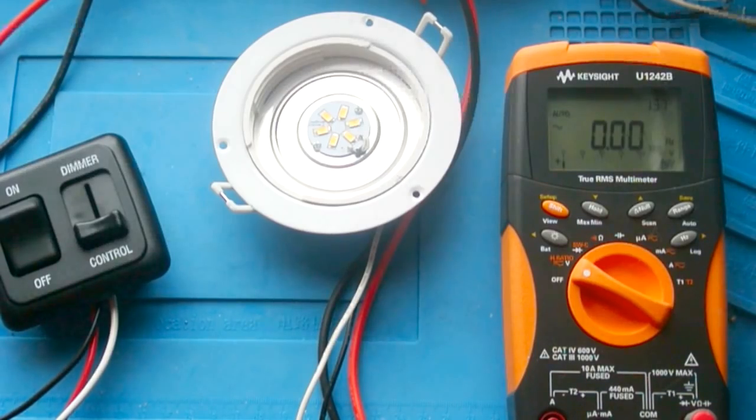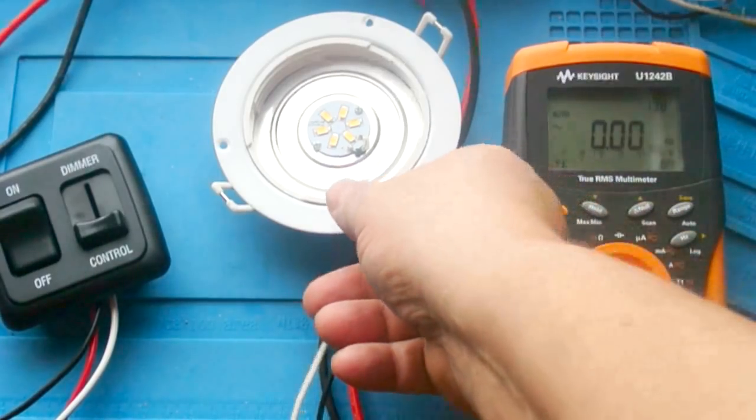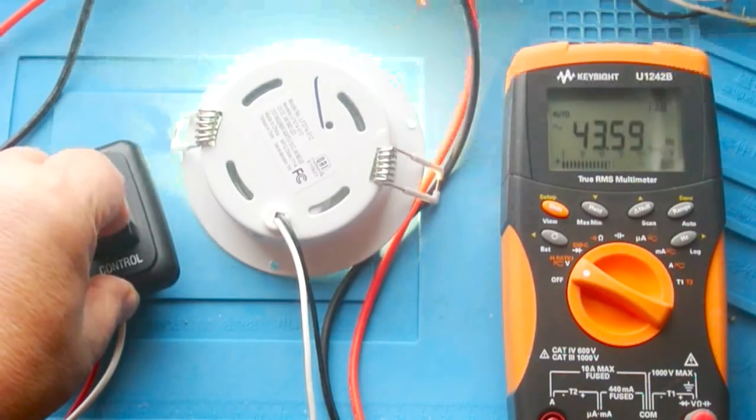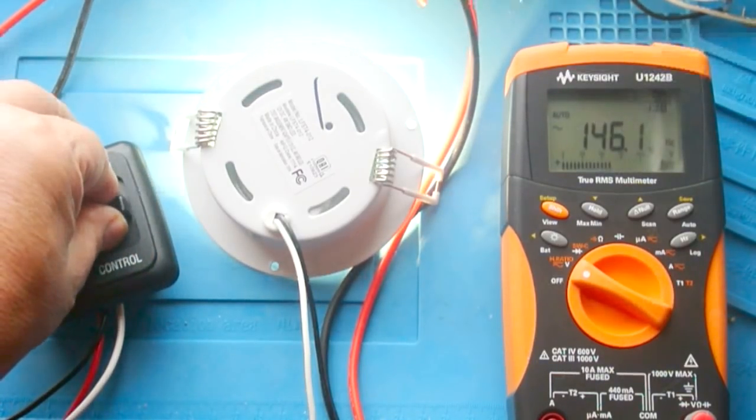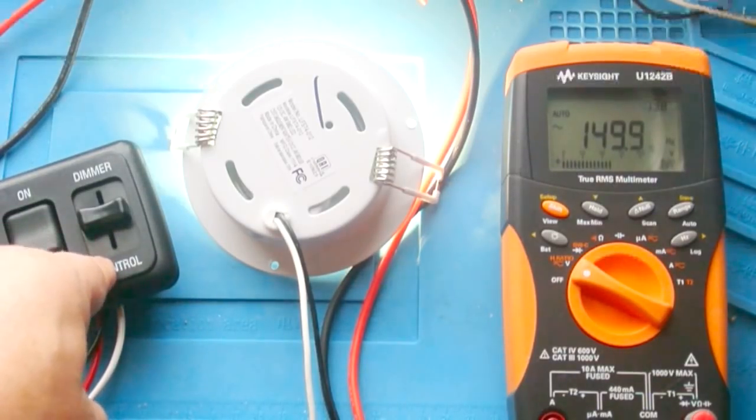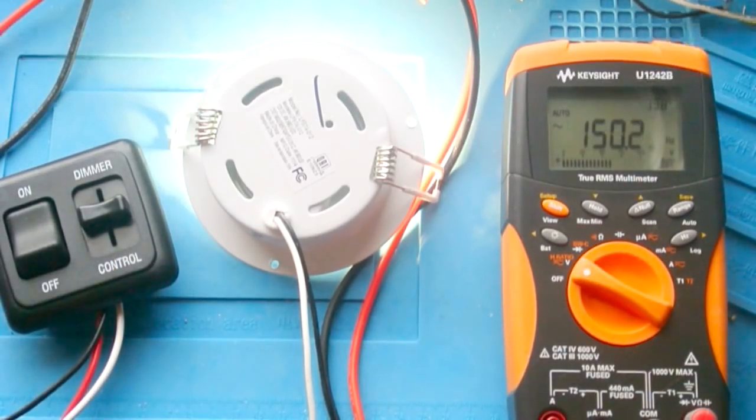And now we're going to conduct the same test using the LED fixture with the switch mode driver. And again, I'm going to turn this over. And you can see we have full brightness, we have dimming. And again, we're at 150 hertz. So with this low frequency dimmer, we can dim this switch mode LED fixture.